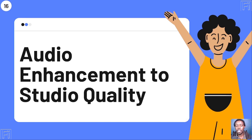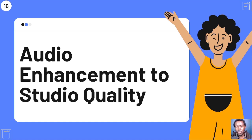Use case number sixteen: the Studio Sound audio enhancement feature helps improve your audio quality to studio-level sound. One caveat is that users with good microphones have sometimes reported distortion, so try it out and see what works for you. Mostly, if you're recording in a noisy environment, Studio Sound will make your audio sound like it was recorded in a studio.